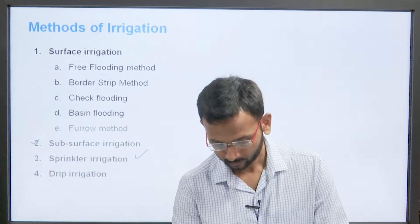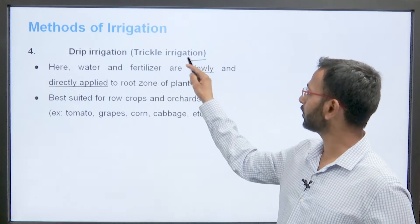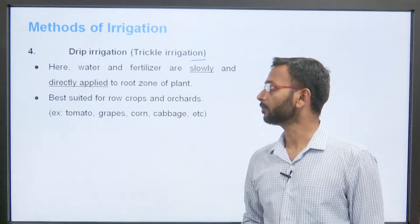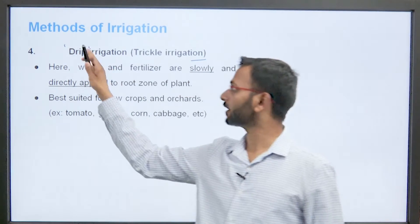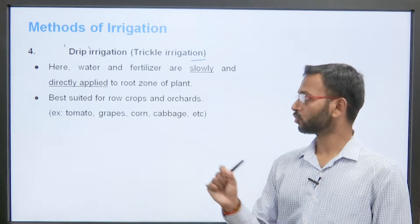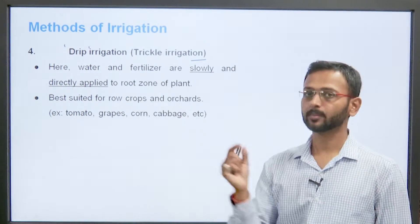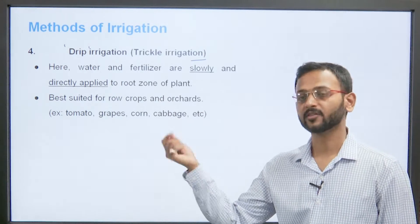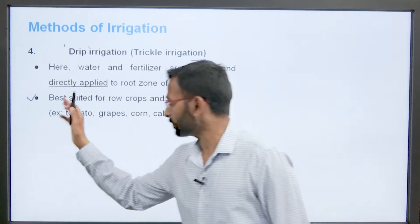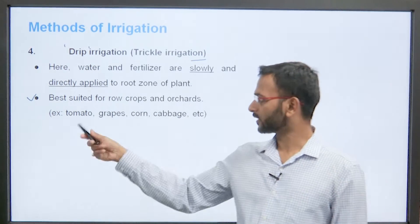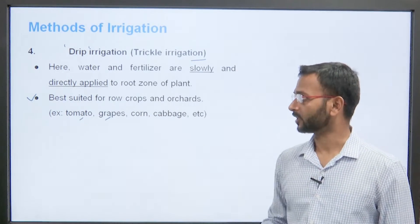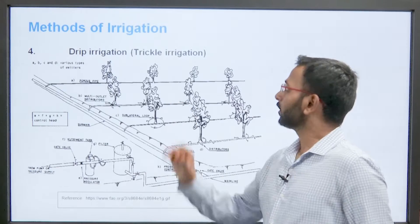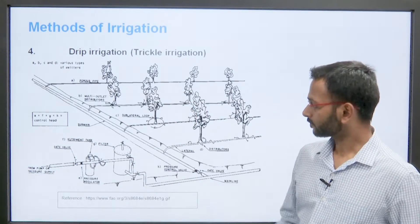Yeh drip irrigation, isko ham trickle irrigation bhi bolte hai. Here the water and fertilizer are slowly and directly applied to the root zone of the plant. Drip jaisa glucose ka drip hota hai na ki drip kar karke us vekti tak paushata hai glucose. Vyase hi yahaan peh fertilizer or water ka mixture jo hai, woh plant ke direct root zone mein ja raha hai. So it will be much more effective aur iski efficiency kaafi jiaadha ho jati hai. It is best suited for the row crops and the orchards. Example ki toor peh tomato, grapes, corn, cabbage etc. These are the crops for which drip irrigation is best suited.